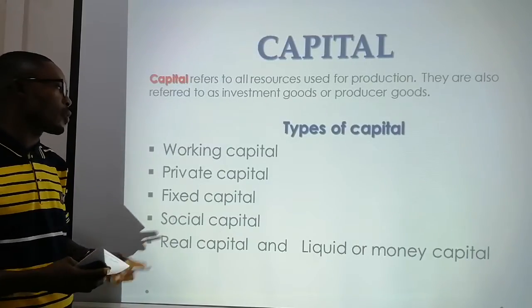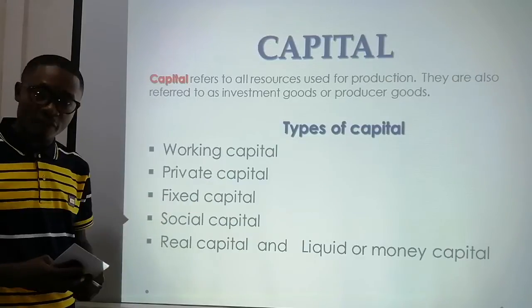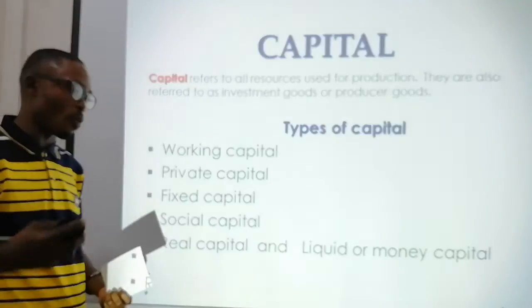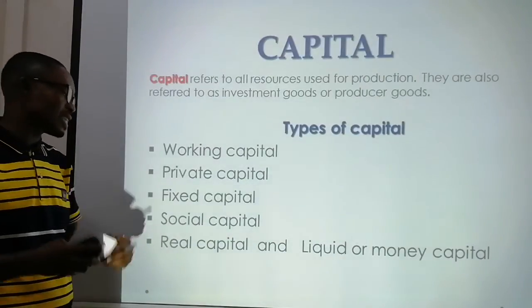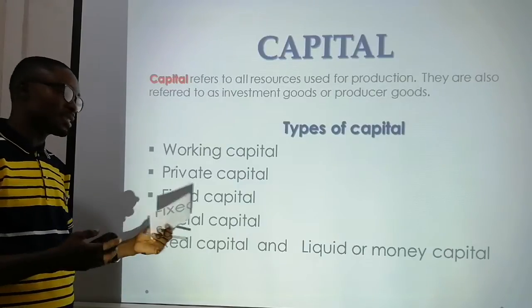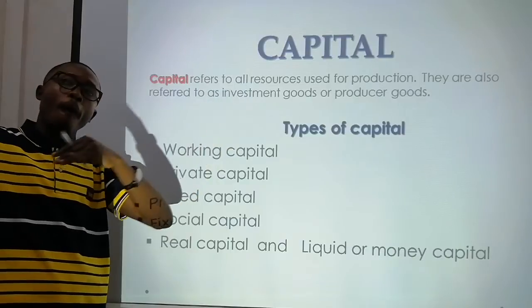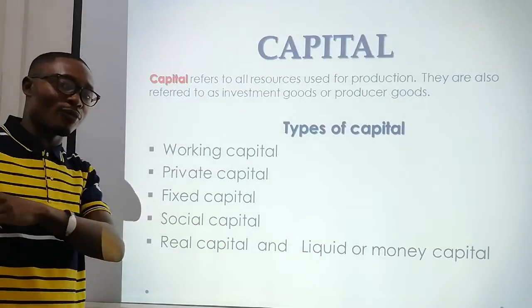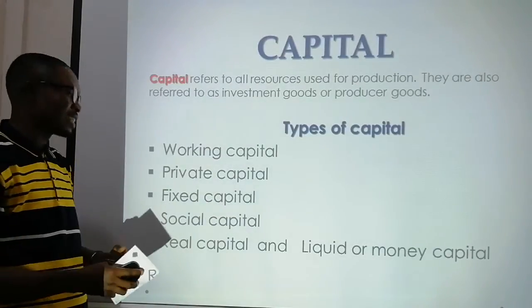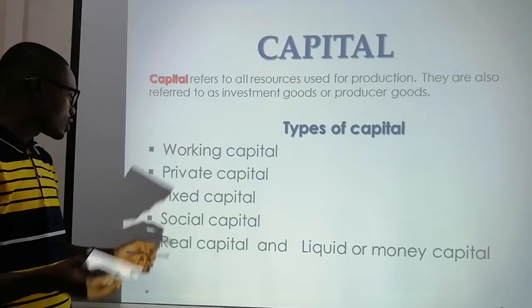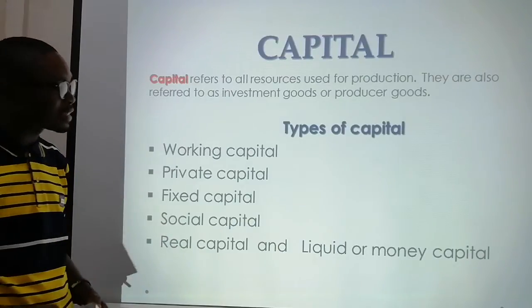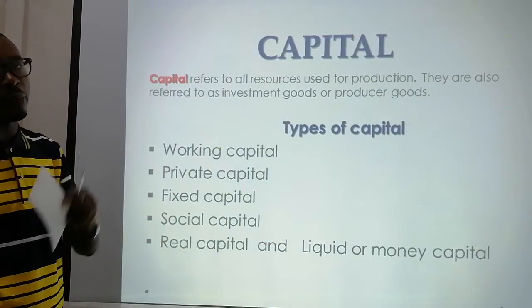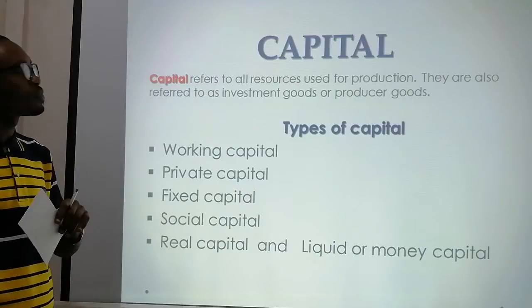Let's look at the types of capital. We have working capital, and private capital — which can be collected from a friend, a private firm, or similar sources. Then we have fixed capital, which includes structures; for example, a university building is fixed capital. We also have social capital and real capital, which can also be referred to as liquid or money capital. These are the types of capital needed to establish your business.